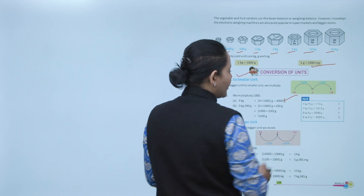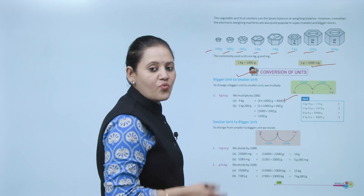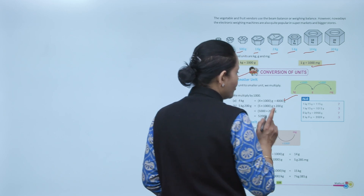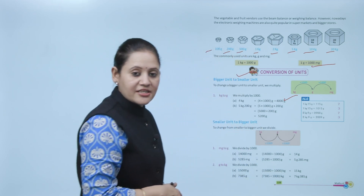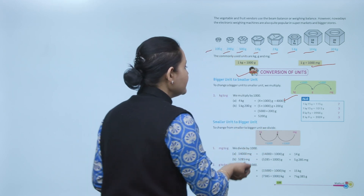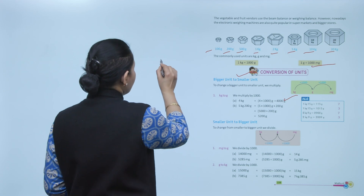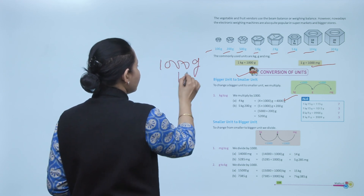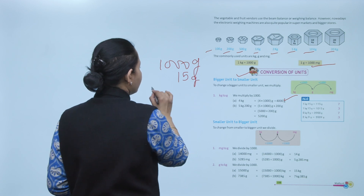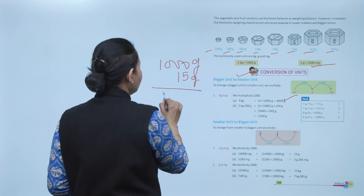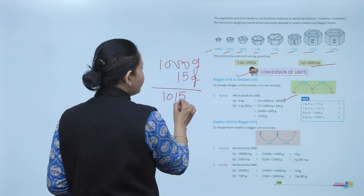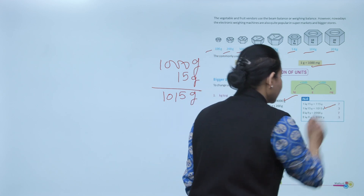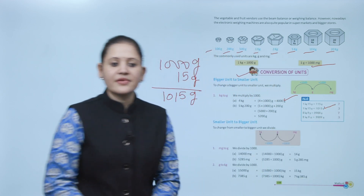Consider 1 kg 15 grams. One might think this equals 115 grams — but that is not correct. Because 1 kg equals 1000 grams, plus 15 grams gives a total of 1015 grams. So 1015 grams is the correct answer.